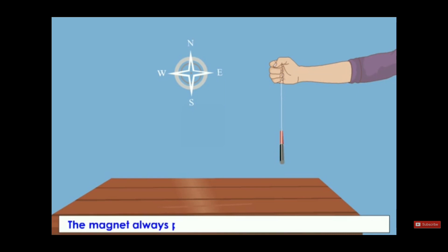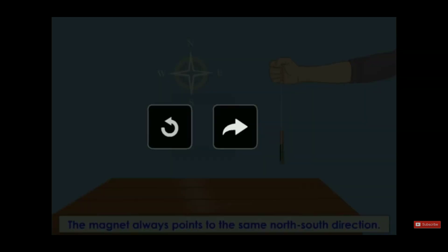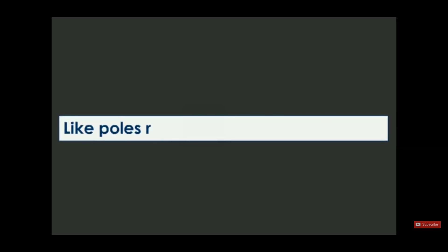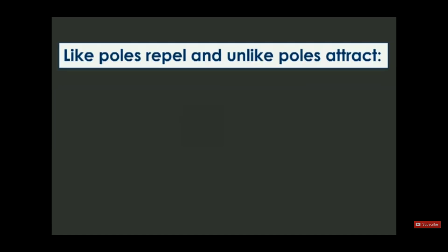Let's talk about another property of the magnet. The magnet, as we said, has two poles. The like poles repel and the unlike poles attract.